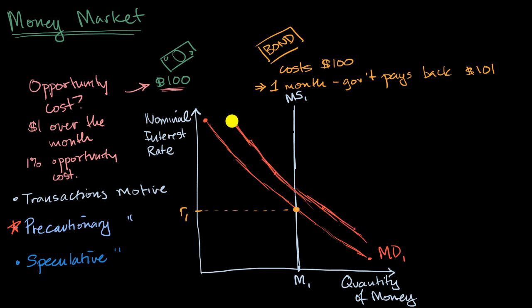And so that would shift the demand curve for money to the right. I could have drawn it a little less hairy, but there you go. That would be MD sub two. We have this shift to the right. And then if that happened, if you had this demand for money increase...